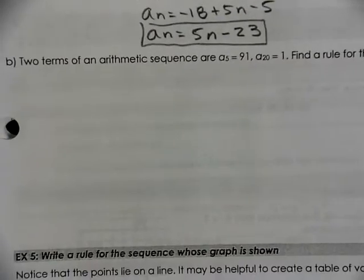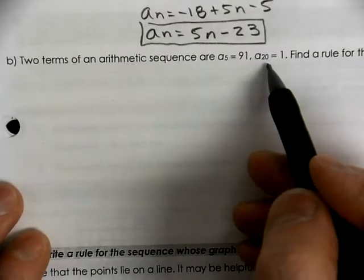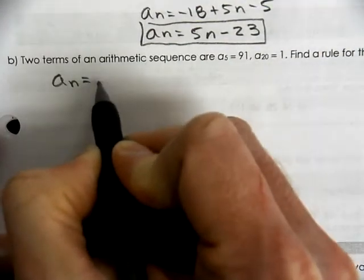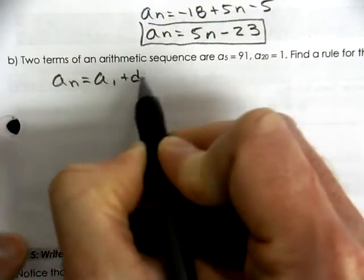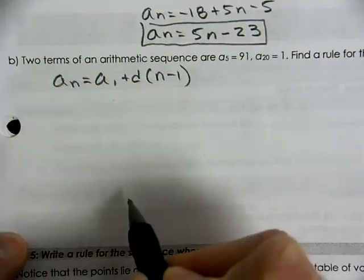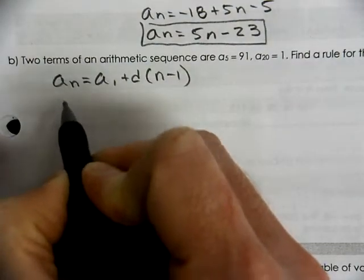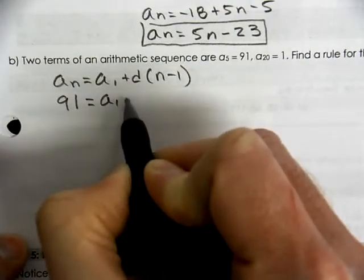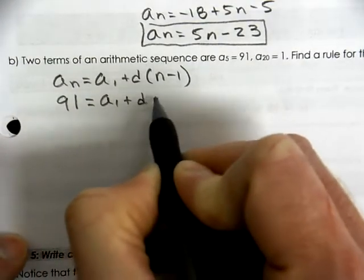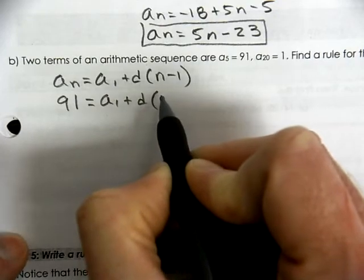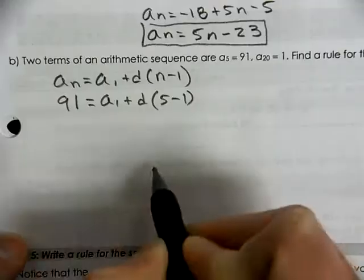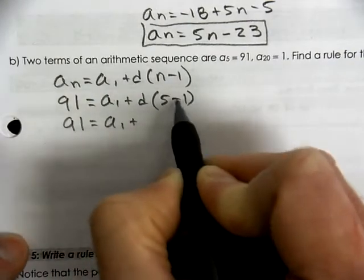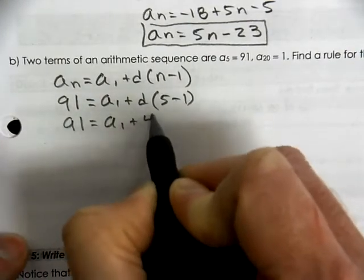Okay, we're going to try it again. We're given two sets of terms. So we're going to start out with a of n equals a of 1 plus d, n minus 1. We're going to plug in the 91. We don't know what our a of 1 is. We don't know what the difference is. But when we're working with 91, we have a 5 minus 1.